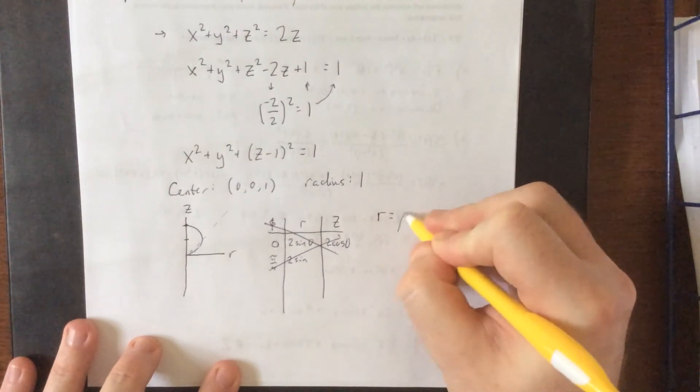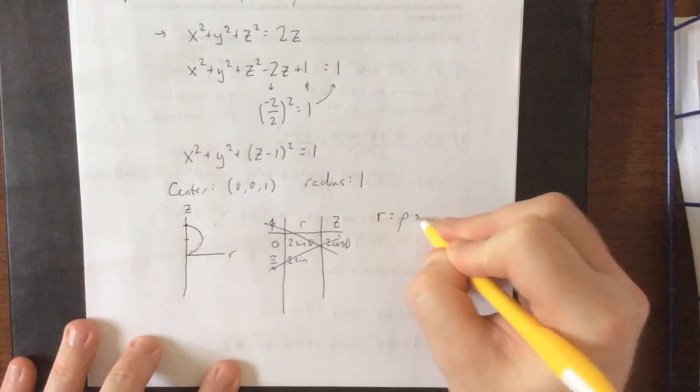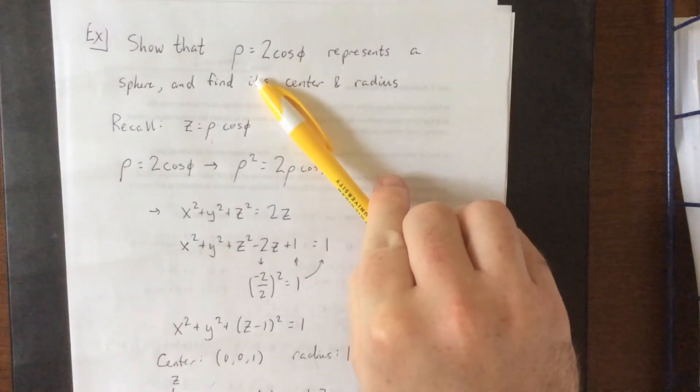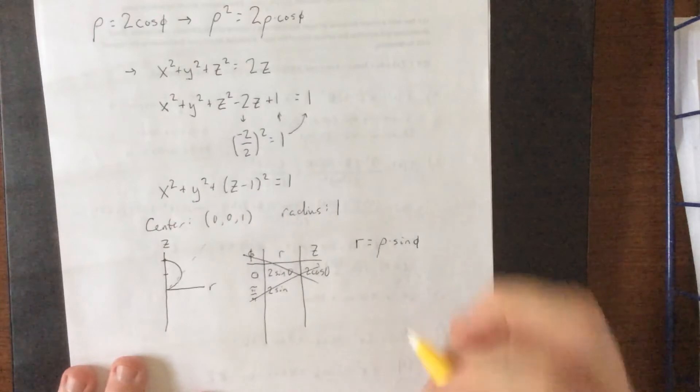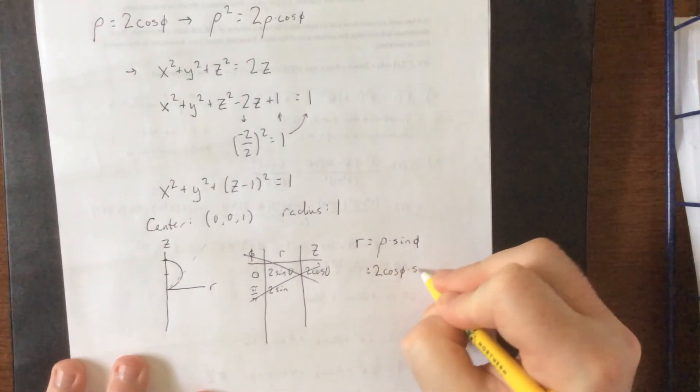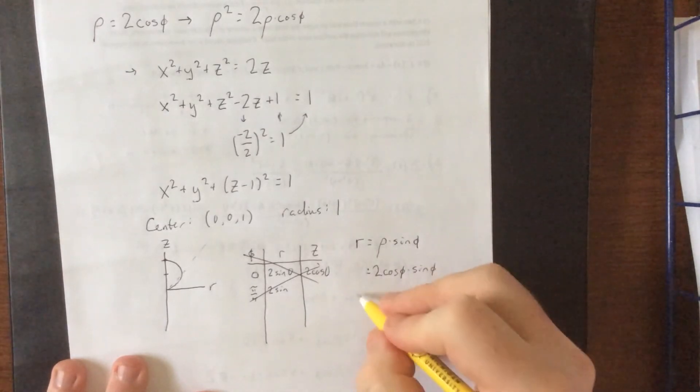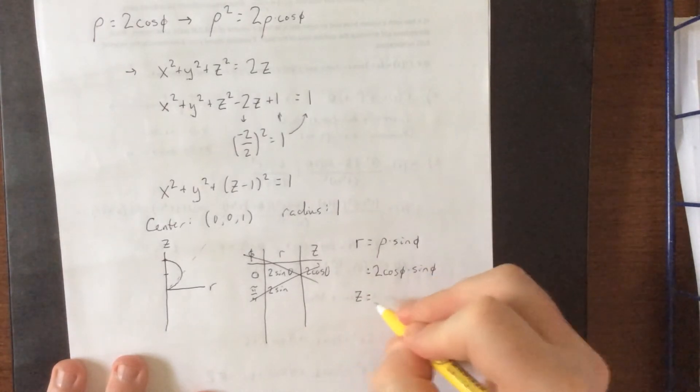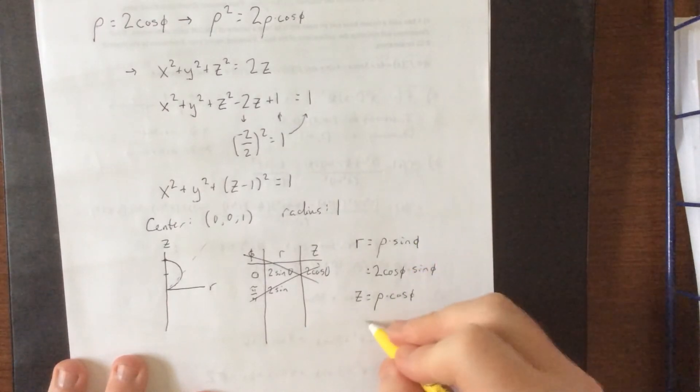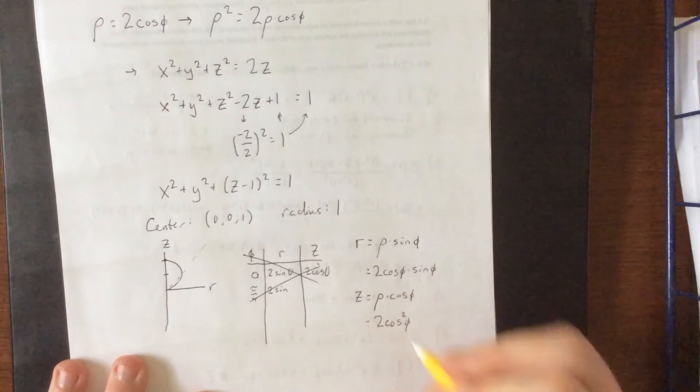So R is supposed to be equal to rho times the sine of phi. We could actually plug in what rho is equal to up here. This would be equal to 2 times the cosine of phi times the sine of phi. Then we also have that z is equal to rho times the cosine of phi. And plugging in again what rho is equal to, this would be 2 times the cosine of phi times the cosine of phi.